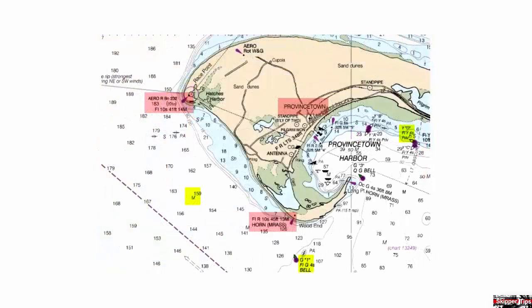Note the vertical letters used on the lighted arrow beacon to the northwest and the lighted horn at Wood End. These objects do not change with wind, wave, swell, or tide, so they use vertical letters in their descriptions. The same vertical letters are used to designate the town's name Provincetown.